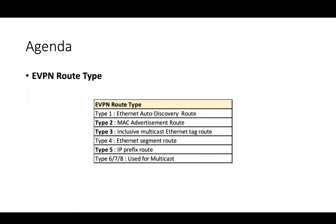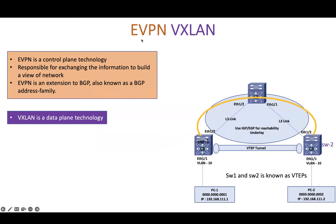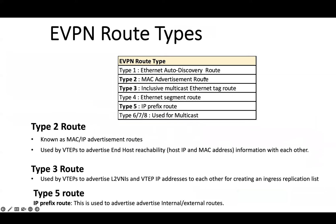Hello everyone, welcome back. Today I am here to talk about E-VPN route types. In the last session we discussed E-VPN VXLAN, which is a combination of E-VPN and VXLAN. E-VPN is a control plane technology that uses MP-BGP to advertise Layer 2 and Layer 3 information. MP-BGP E-VPN has different route types to carry different information, like type 1, 2, 3, 4, and 5, plus a few others used for multicast.